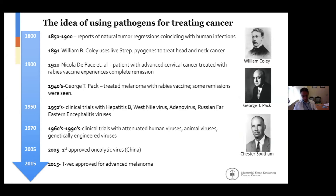What I discovered at that point is that the idea was not new and actually predates the use of chemotherapy or radiation therapy. It starts with the 1800s when people noticed that sometimes patients had natural tumor regressions that coincided with human infections. In the 1890s, William Coley started using Streptococcus pyogenes to treat head and neck cancer. And then over the next hundred years, there'd been multiple experimentation with various human and animal viruses which demonstrated different degrees of success. Eventually this culminated in 2015 with a virus called T-VEC being approved for advanced melanoma.